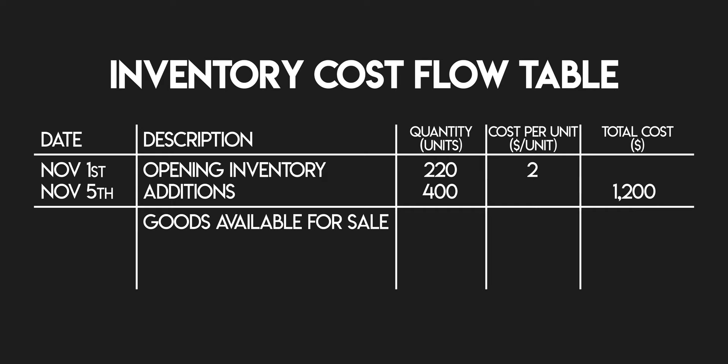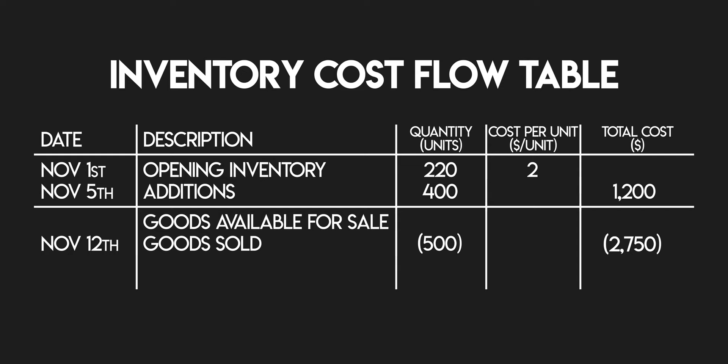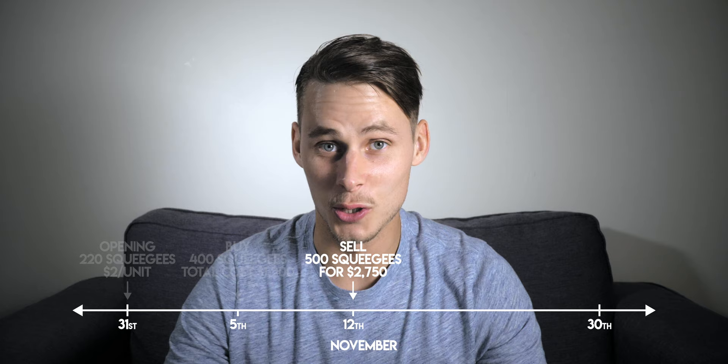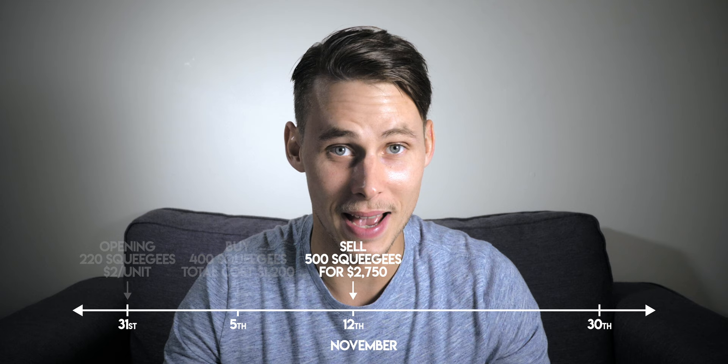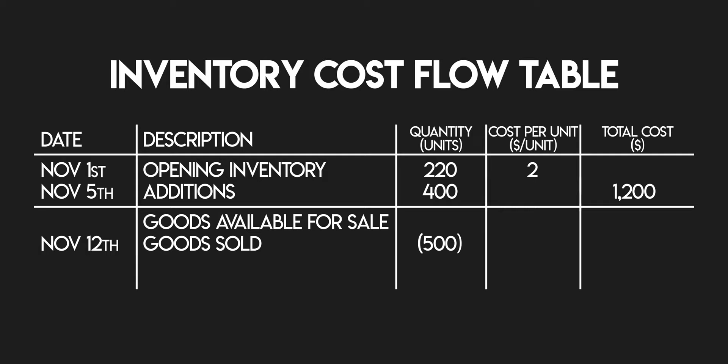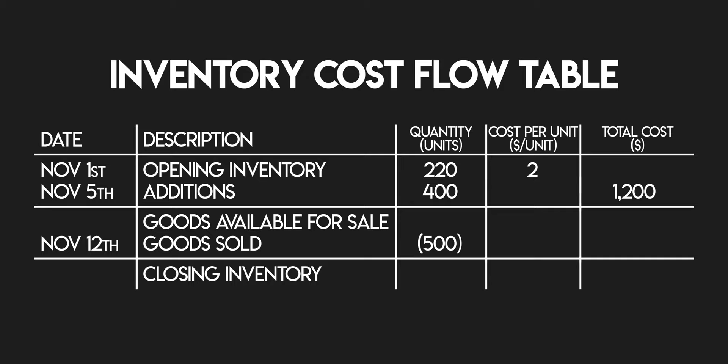Finally, on November 12th, you sold 500 squidgies for $2,750. So on November 12th, you sold 500 units — which needs to be negative because you no longer own these squidgies. The sale reduced your inventory on hand. Hold up — we can't enter the $2,750 as your total cost. You sold 500 squidgies for $2,750, but this is the revenue that you made, not what these squidgies actually cost you. We'll have to work that one out. We also need to work out your closing inventory at the end of the month on November 30th, which brings us on to step three.